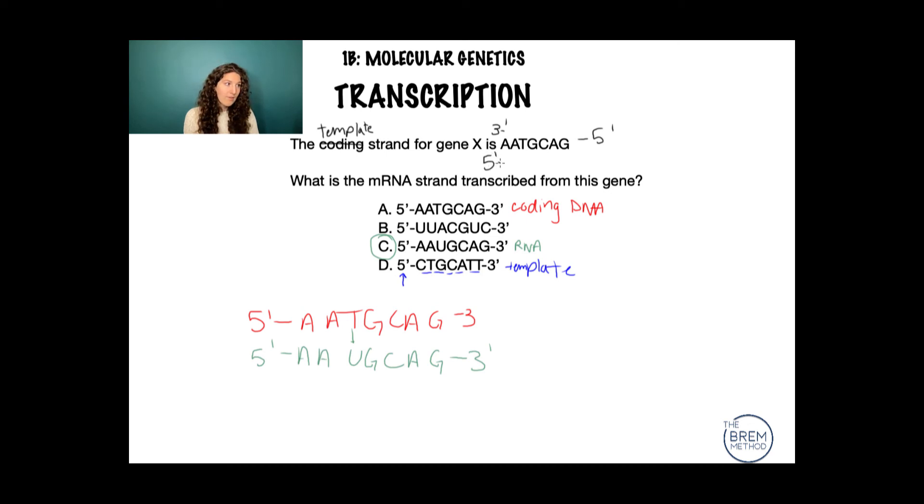So, five prime, remember A's go to U's: U, U, A, C, G, U, C, three prime. Now, check it out. Same sequence here.